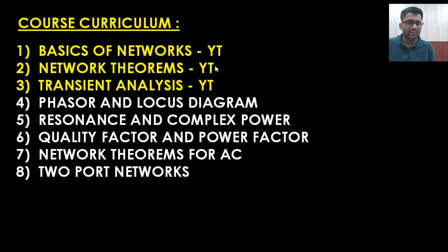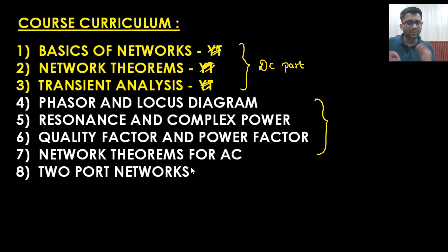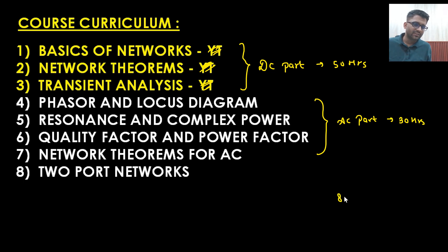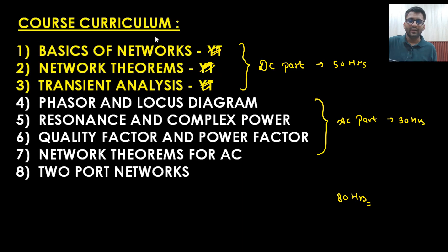Now let's look at the course curriculum. The first three chapters cover the DC part, which is roughly around 50 hours. The remaining chapters cover the AC part, roughly around 30 hours. Two-port networks are common to both DC and AC. So in total, the course content is approximately 80 hours, excluding prerequisites. In DC: basics of networks, network theorems, and transient analysis. In AC: phasor, locus diagram, resonance, complex power, quality factor, power factor, network theorems for AC, and two-port networks.